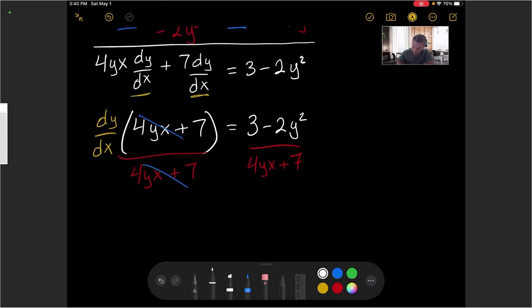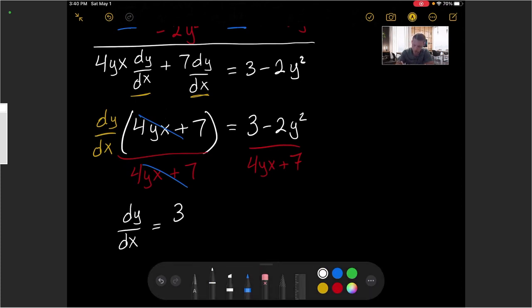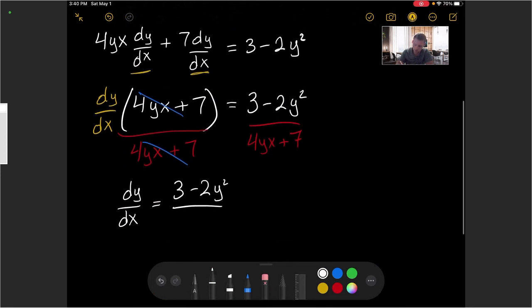So let's rewrite that one more time. We have dy/dx, the derivative of y with respect to x, is equal to (3 - 2y²)/(4yx + 7). Again, my derivative with respect to x here is dependent on both x and y in this equation.